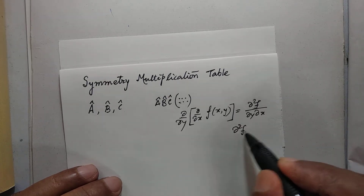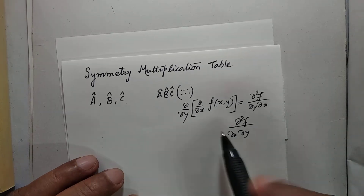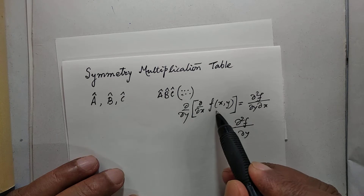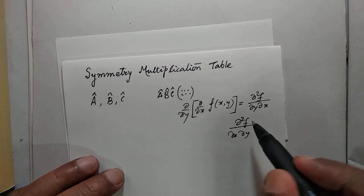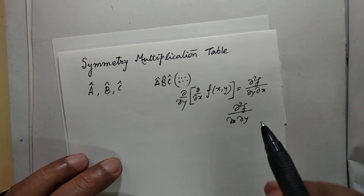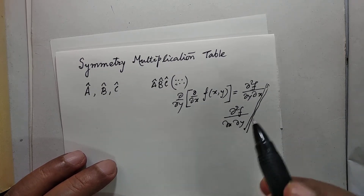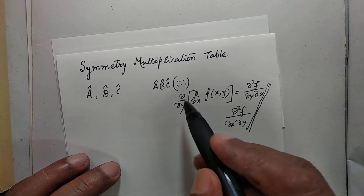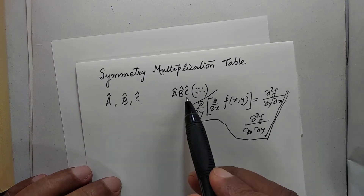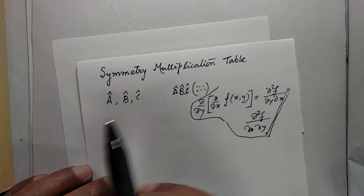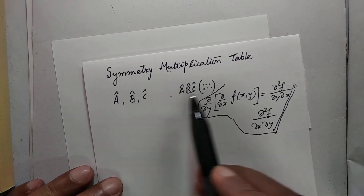And what does ∂²f/∂y∂x mean? This means that ∂/∂y is operated on the function first, then ∂/∂x is operated on the result. These two may or may not be the same — that depends on the nature of f. Such sequences of operators are commonly used in thermodynamics and in every branch of physics or mathematics. This right-to-left sequence is the commonly used convention in products of symmetry operators.